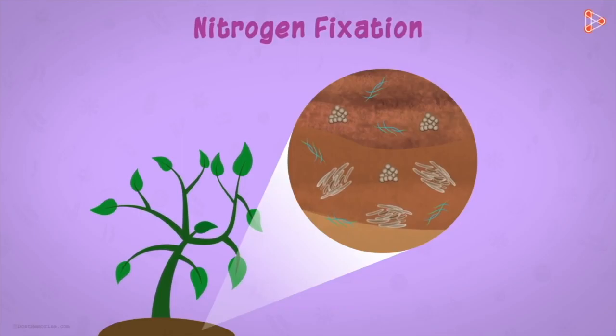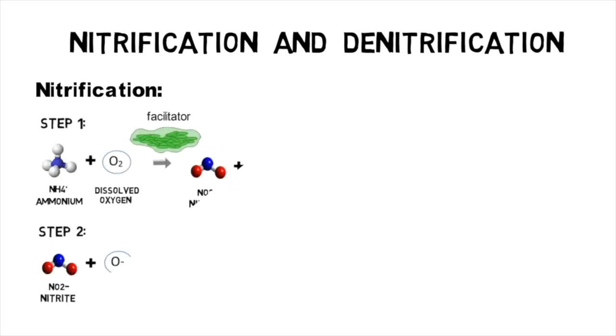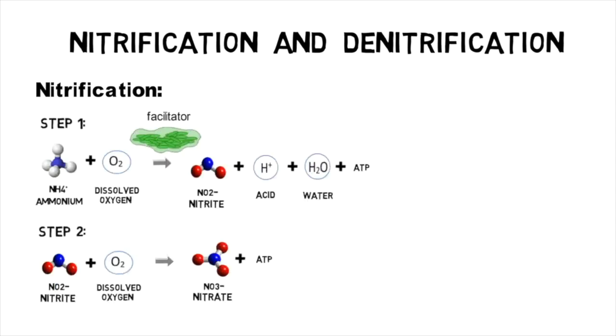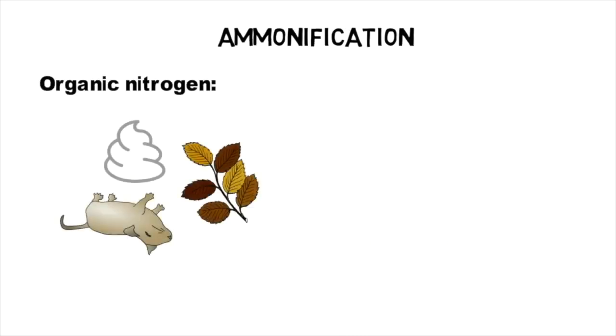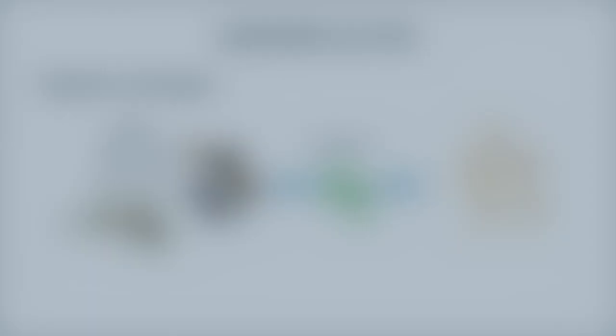Other processes in the nitrogen cycle include nitrification, or the bacterial oxidation of ammonia to nitrite and nitrates; denitrification, or the reduction of nitrates to gaseous nitrogen; and finally ammonification, or the breakdown of amino acids by decomposer organisms to produce ammonia.